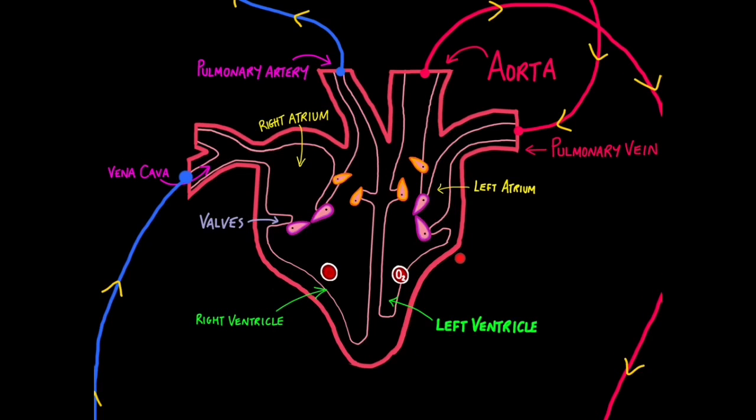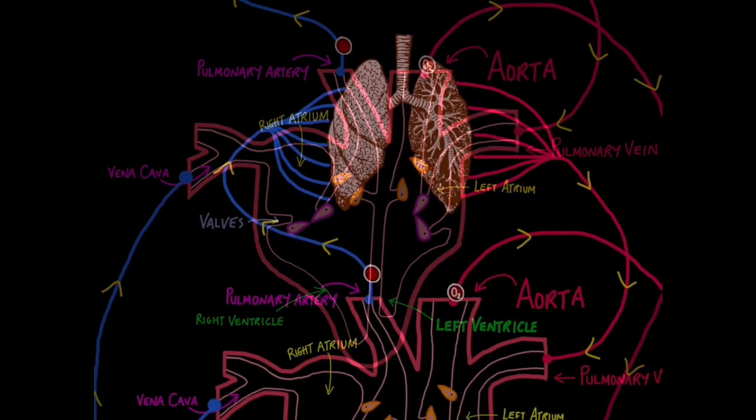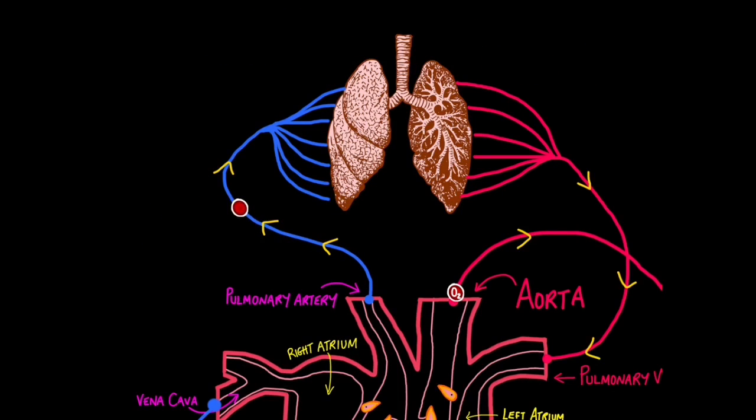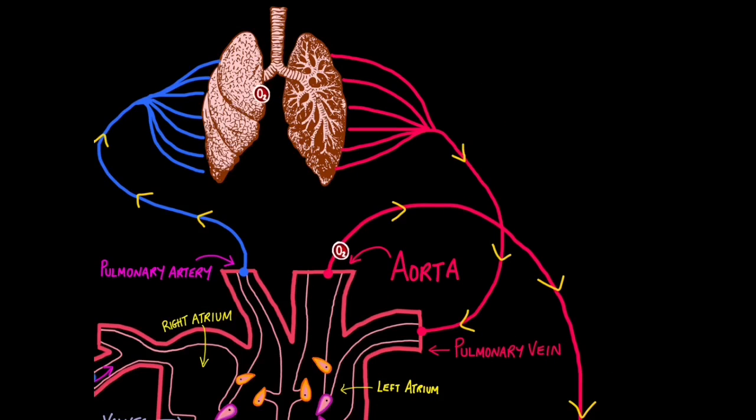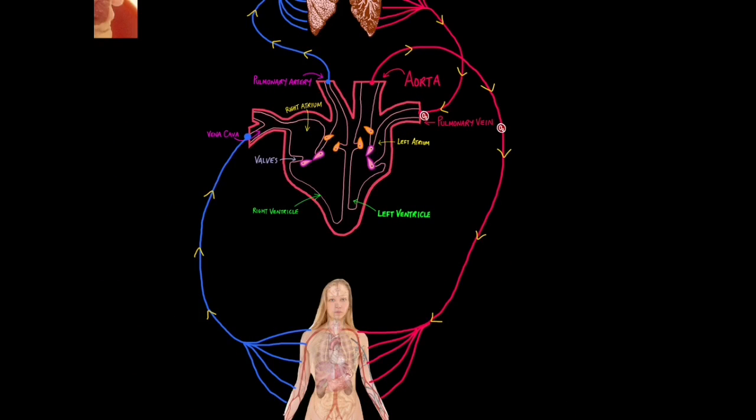So now it's the ventricles turn to contract and as a consequence the AV valves slam shut and the semilunar valves open. This allows blood to leave the heart via the pulmonary artery and the aorta. Red blood cells travelling along the pulmonary artery will reach the lungs where they pick up oxygen. And then they return to the heart via the pulmonary vein, back to the heart.